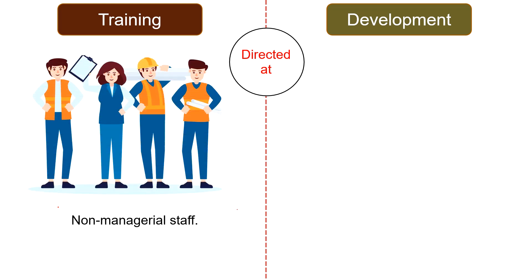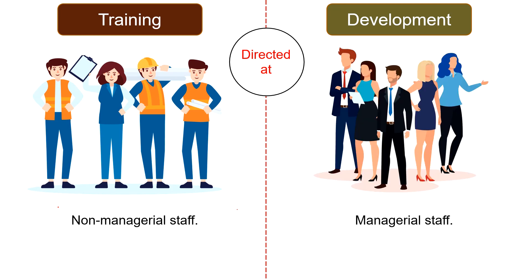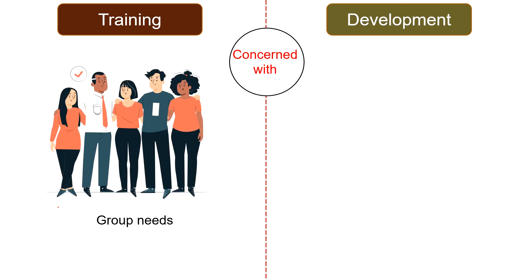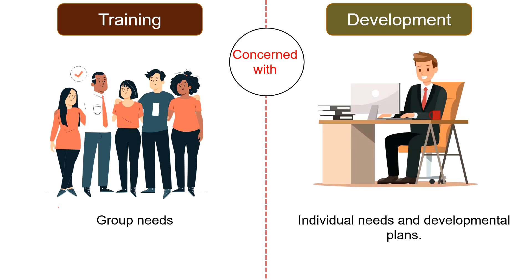Directed at: while training is directed at non-managerial employees such as foremen or laborers, as it relates to the technical aspect of performing a function, development activities aim to improve abilities of managers and supervisors for understanding and effectively implementing theoretical, conceptual skills, and various aspects of the job. Concerned with: training programs are concerned with group needs where many participants take part in organized group events like seminars and workshops, whereas development activities are more personalized, focusing on individual needs and development plans.